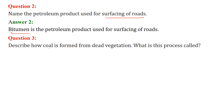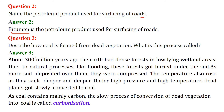Describe how coal is formed from dead vegetation and what is the process called. About 300 million years ago, the earth had dense forests in low-lying wetland areas. Because of natural processes like flooding, these forests got buried under the soil. As more and more soil deposited over them, they were compressed and the temperature rose as they went deeper and deeper.